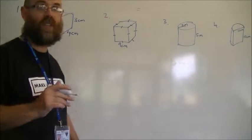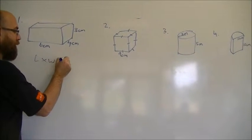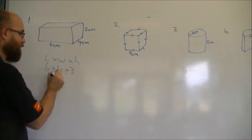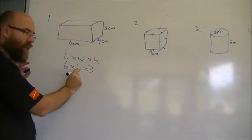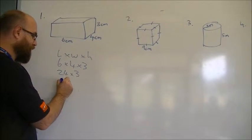So, I'm just going to quickly go through these answers here. This one is length times width times height, so it's 6 times 4 times 3. 6 times 4 I know is 24, times 3 equals 72.